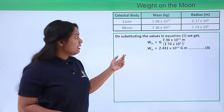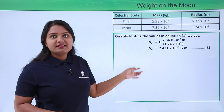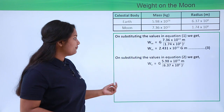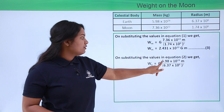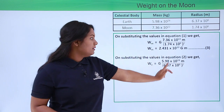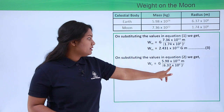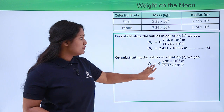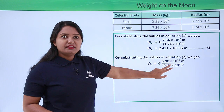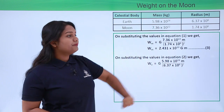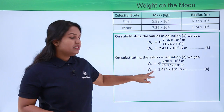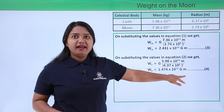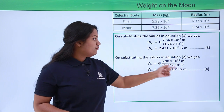Doing the same with equation 2 for the earth, we have W_e equals G times 5.98 times 10 to the power 24 times m, divided by 6.37 times 10 to the power 6, the whole squared. Substituting the mass and radius of the earth, we get W_e equals 1.474 times 10 to the power 11 times G times m. This is equation 4.